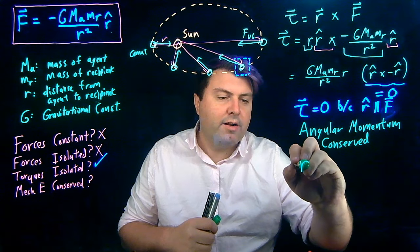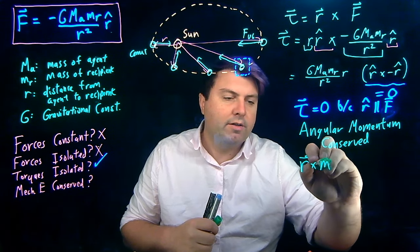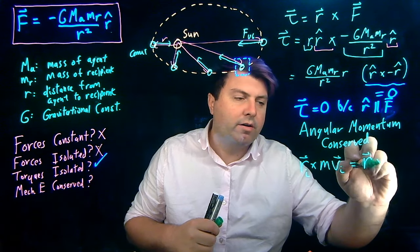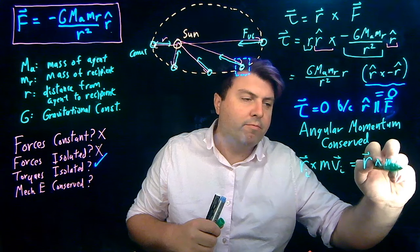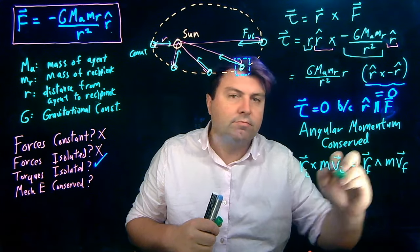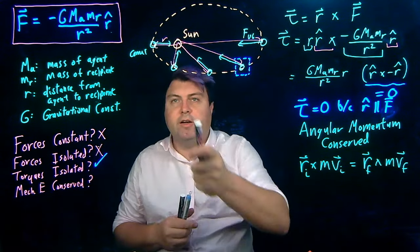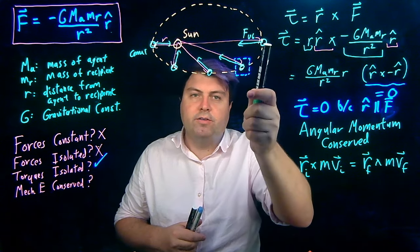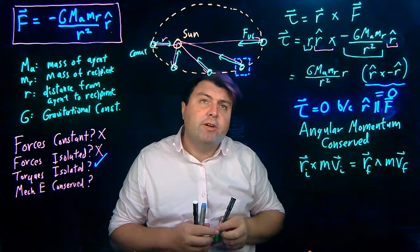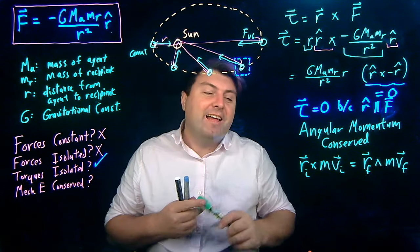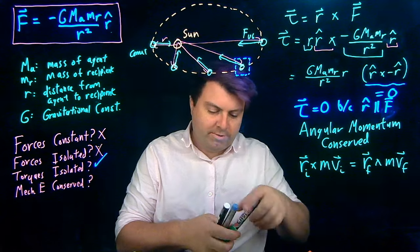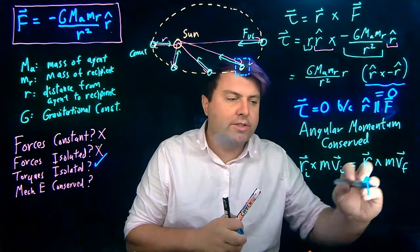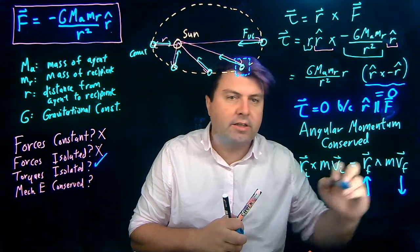We have no outside torques. So that means that r cross mv initial is equal to r final cross mv final. So as we look at this comet's path along here, as it goes from here to here, where it increases in radius, and so if it has a larger and larger radius, if this gets larger, then in order to stay constant, its velocity has to get smaller.